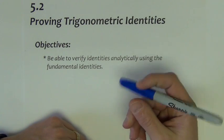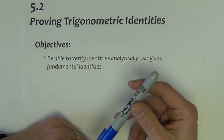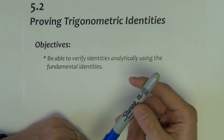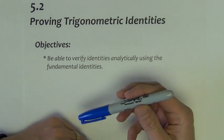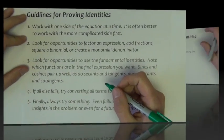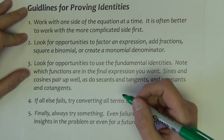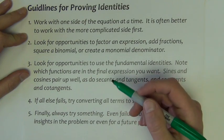Section 5.2 is titled Proving Trigonometric Identities. In this lesson, we're going to use many of the fundamental identities that we learned in Section 5.1 to verify identities. Let's begin first by discussing some guidelines that we'll use for proving or verifying these identities.